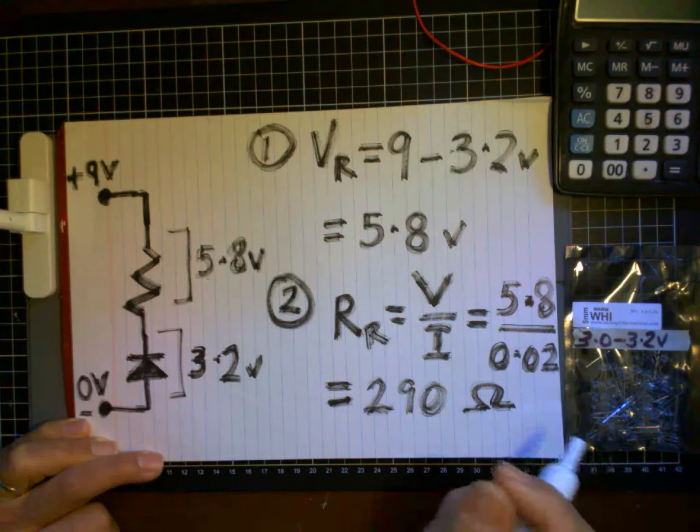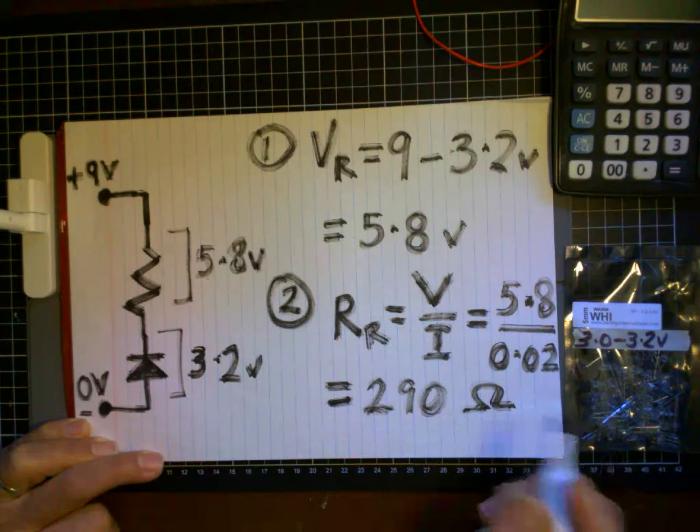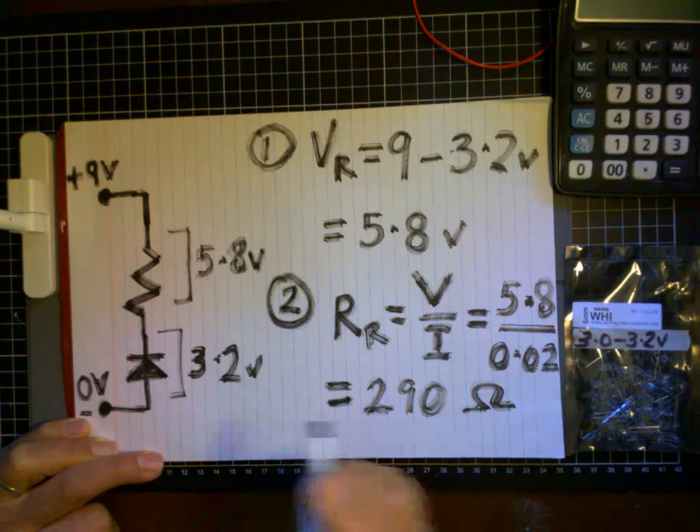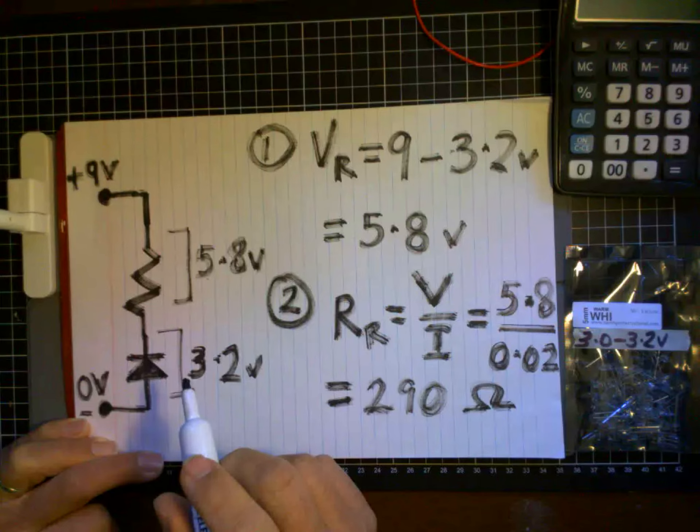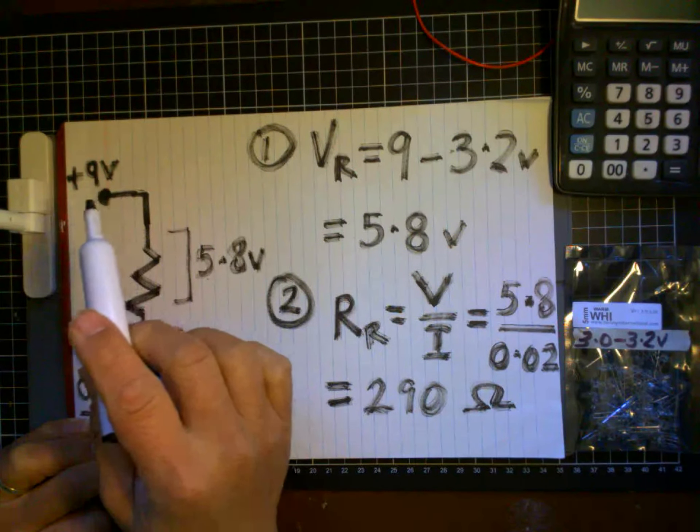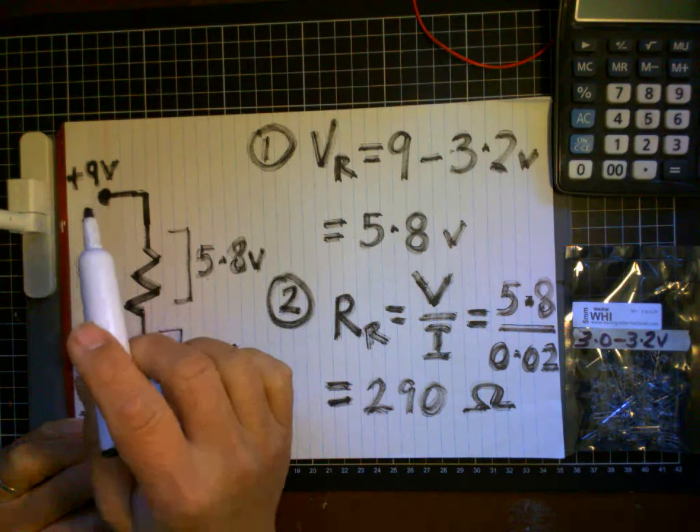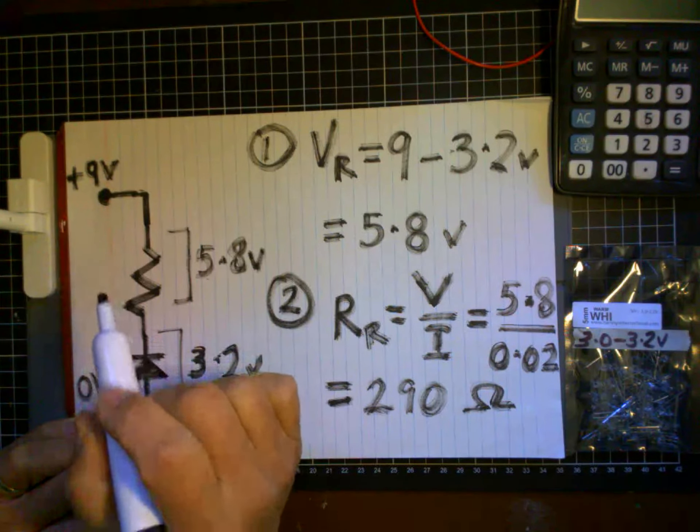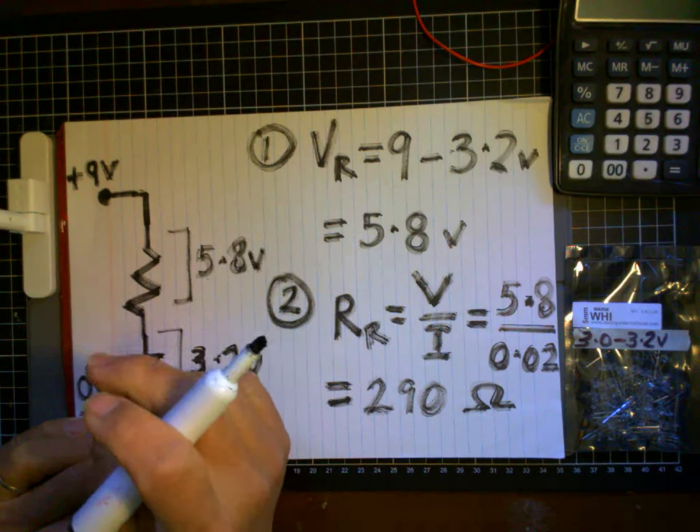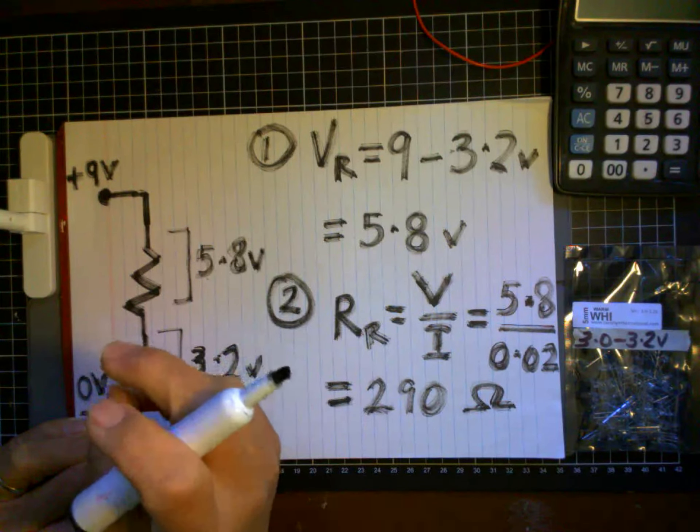So if you get a 300 ohm resistor, that should be good enough. If you get a little bit less than 300 ohms, that's okay too—it's approximate. When you go about doing your calculations, it's always a good idea to base your total voltage on the lower end of the battery performance, otherwise you'll find that your LEDs won't work for too long because the battery power will be diminished.